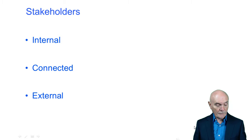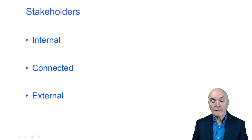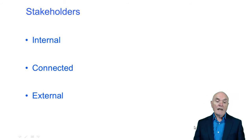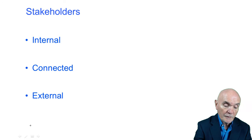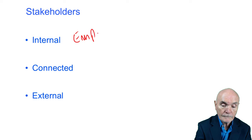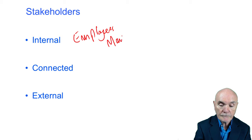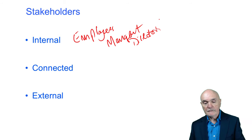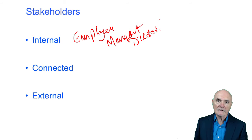You need to have an idea of what these are, though it's not critically important. An internal stakeholder is somebody who is within the organisation — typically here you'd be looking at employees, management, and directors. These are people who spend all their working days inside the organisation.